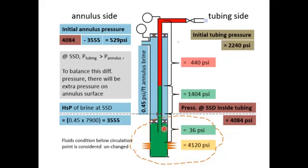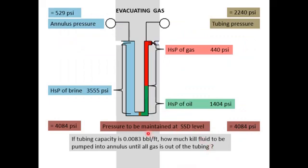The pressure and fluid below the circulating point will not change during the killing process. So at the start of the well killing process, when we open the SSD, we have 529 psi in the annulus and 2,240 psi at the tubing head. We then pump kill brine into the annulus, oil moves up, and gas exits the well.